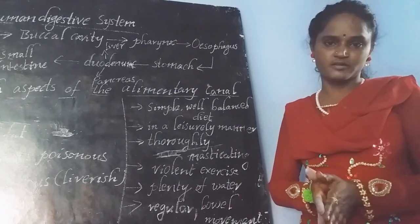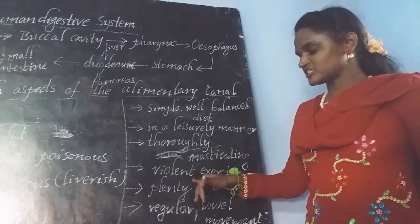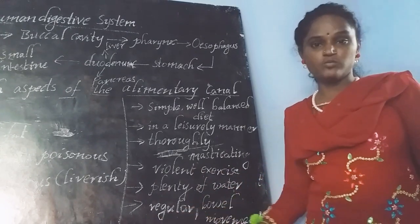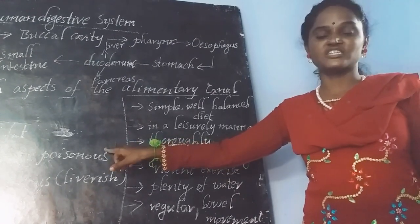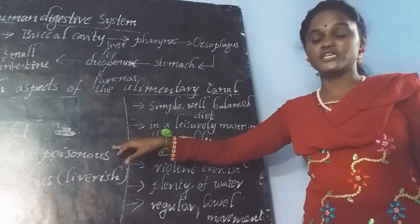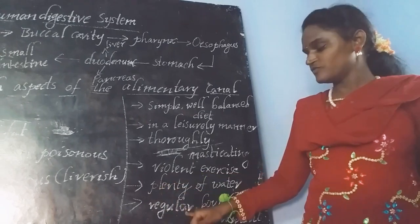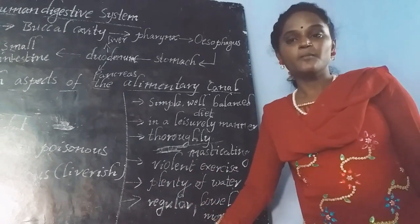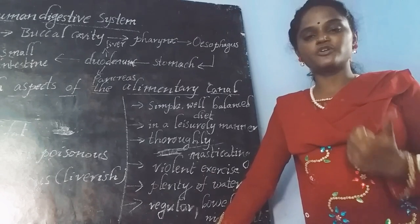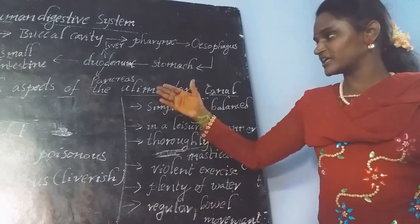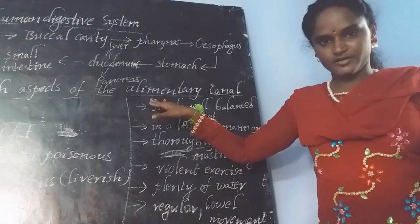Another very important tip to keep our alimentary canal safe from many diseases is taking plenty of water. Every day we have to take plenty of water, as it helps with regular bowel movement in our body and expels waste material from the large intestine. Along with this, we should also include a proper amount of fiber substances — roughages — in our diet, which also keeps our alimentary canal healthy.